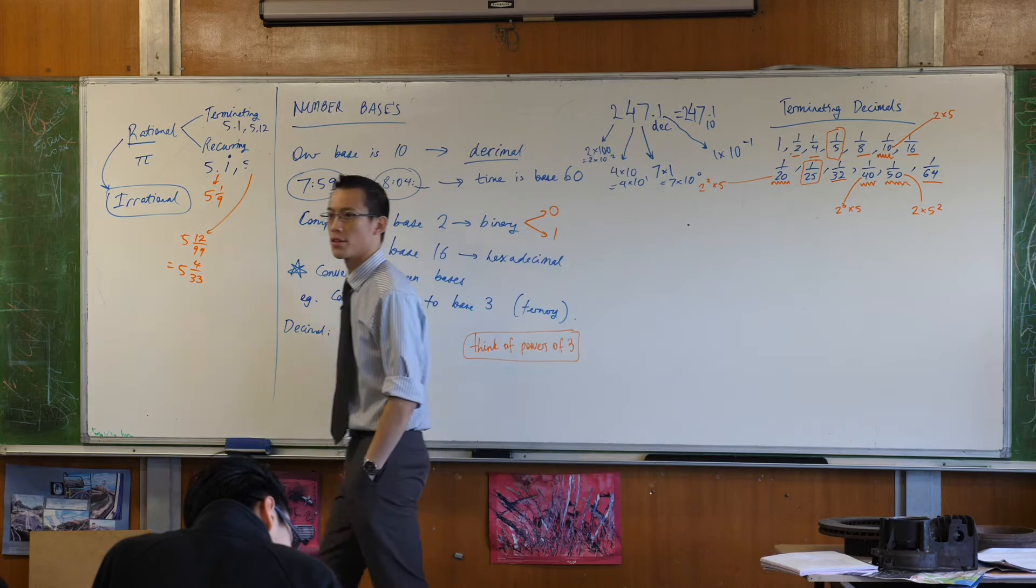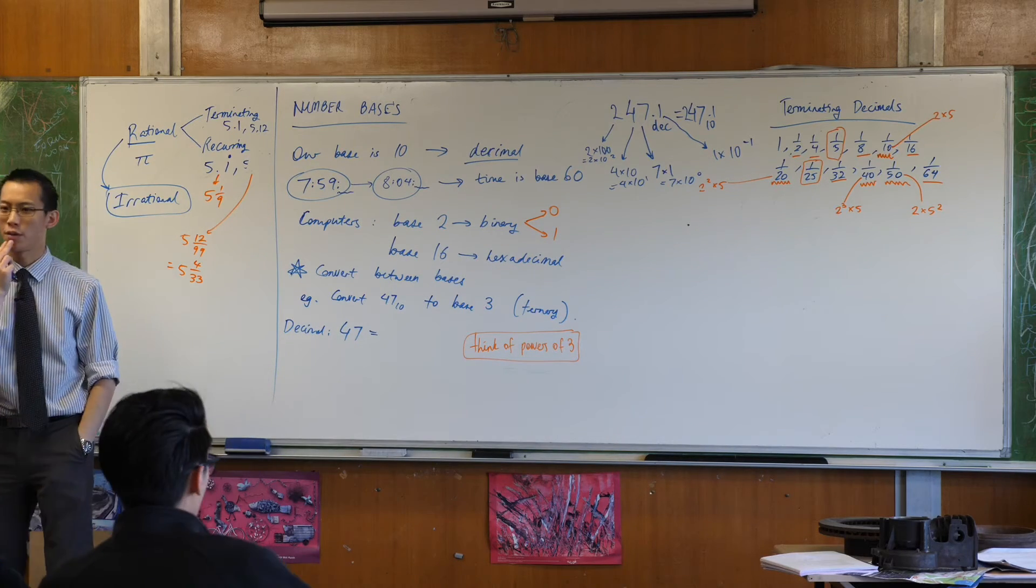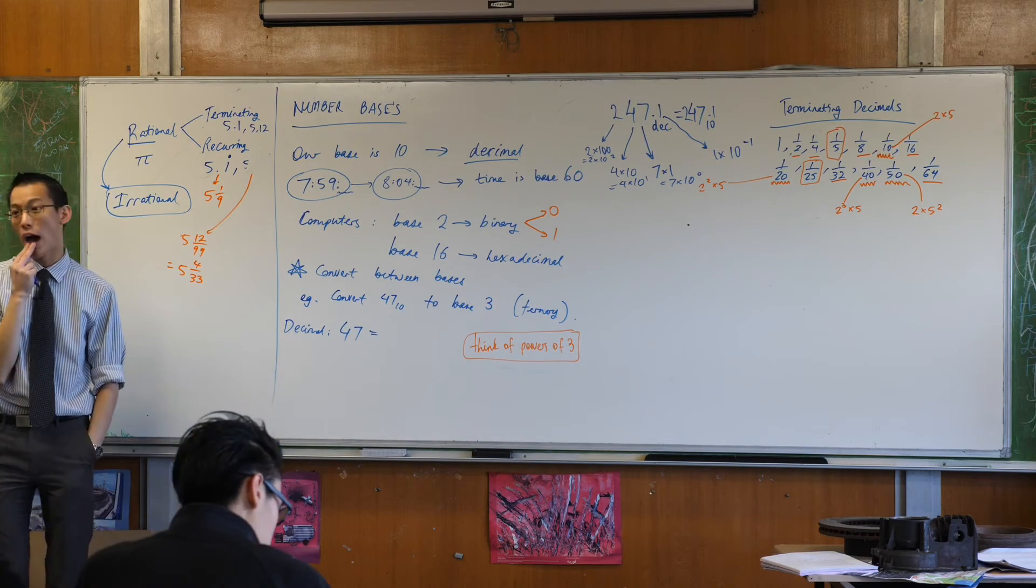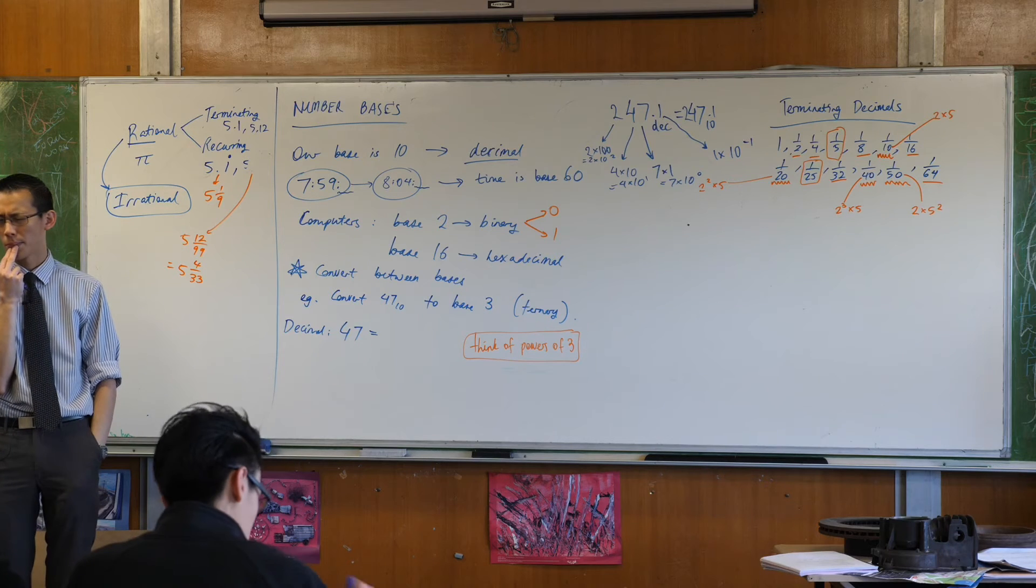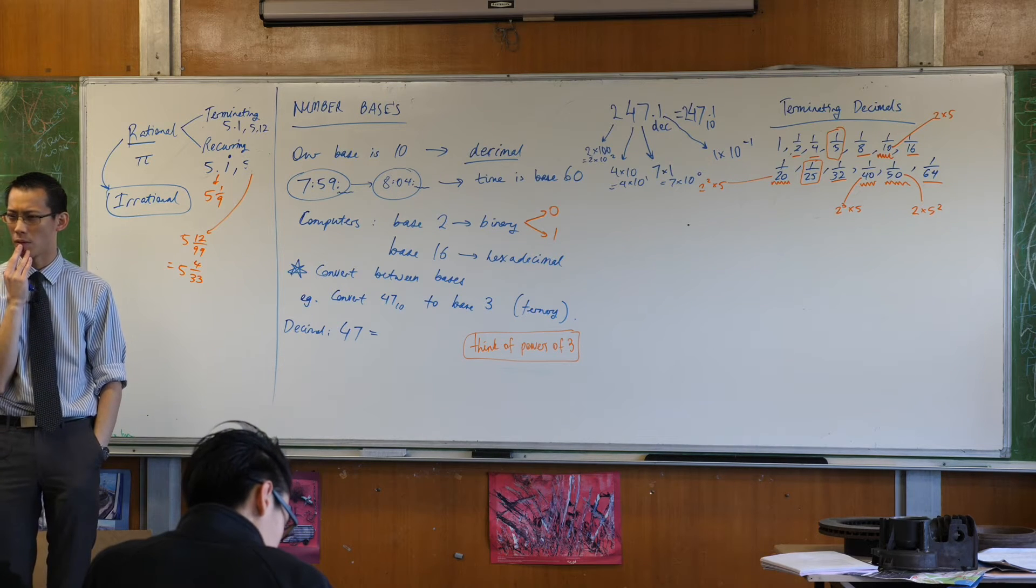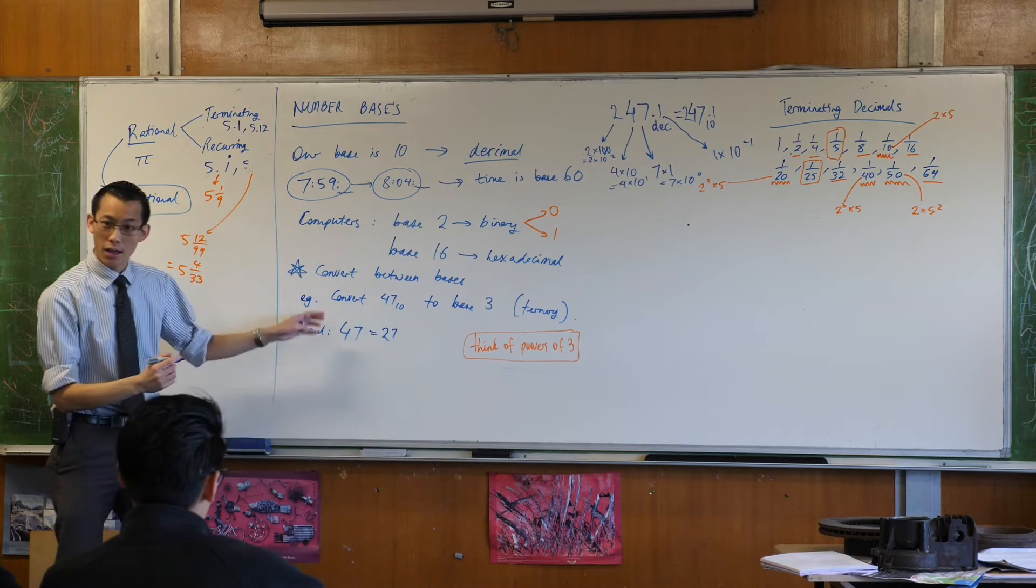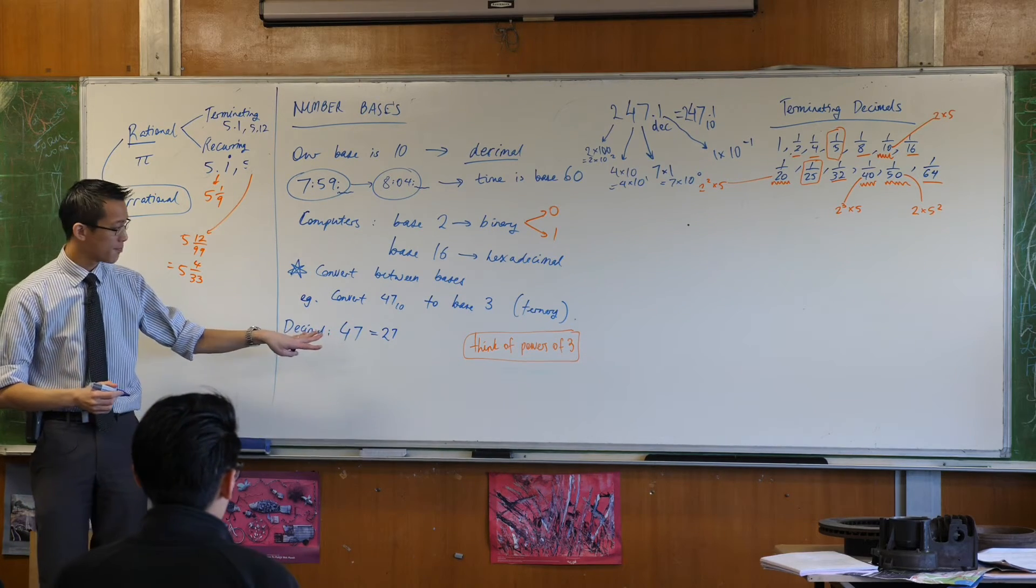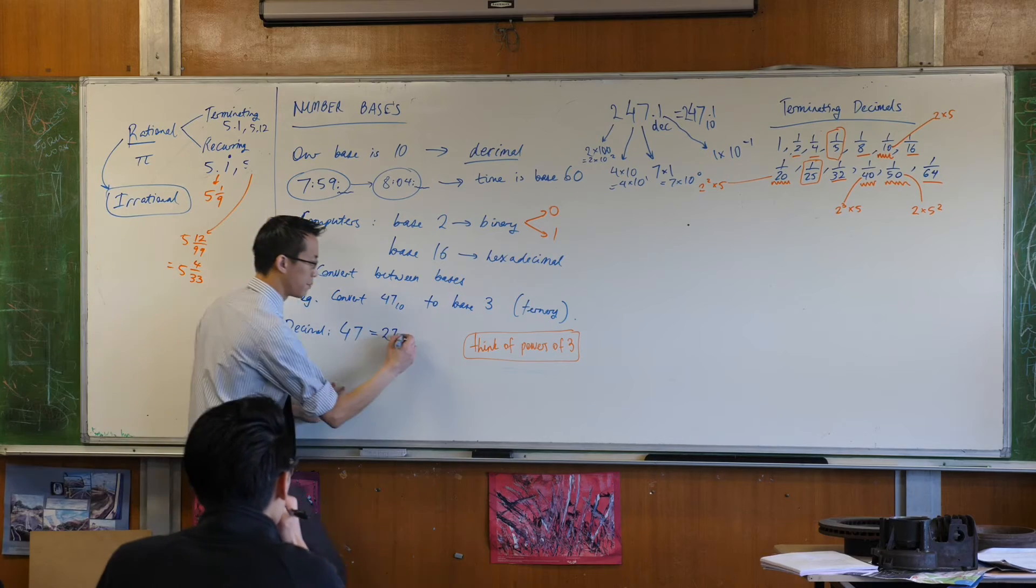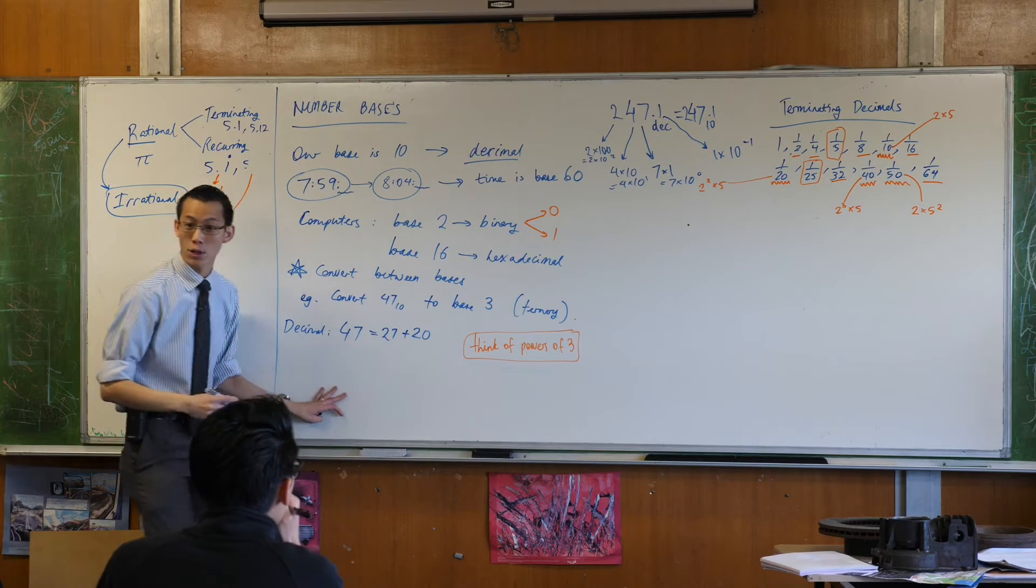So tell me 47. What's the biggest power of 3 you can think of that fits inside 47? 27 seems like the biggest one right? Which is 3³. I'm going to write 27. That's the biggest power of 3 I can fit in there but there's other numbers as well. There's 20 left over.